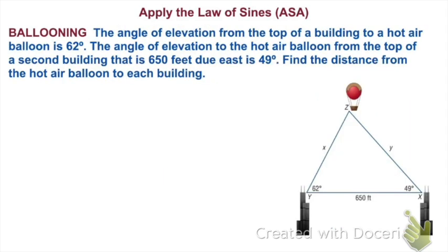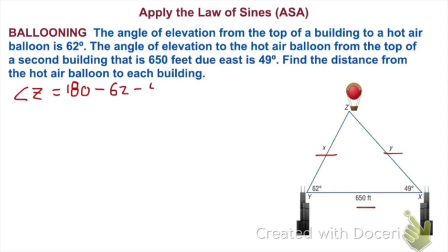Here we have a word problem. The angle of elevation from the top of a building to a hot air balloon is 62 degrees. The angle of elevation to the hot air balloon from the top of a second building that is 650 feet due east is 49 degrees. Find the distance from the hot air balloon to each building. I've already drawn a picture — draw pictures for word problems so you can visualize what's going on. We need to find angle Z first: 180 minus 62 minus 49 gives us angle Z equals 69 degrees.